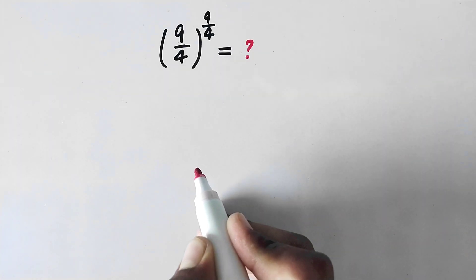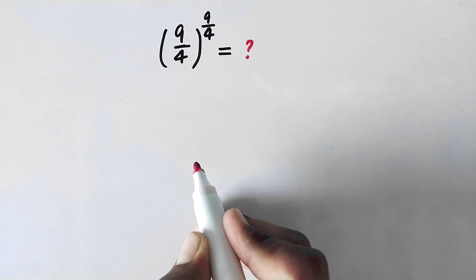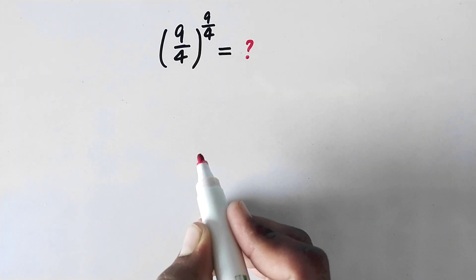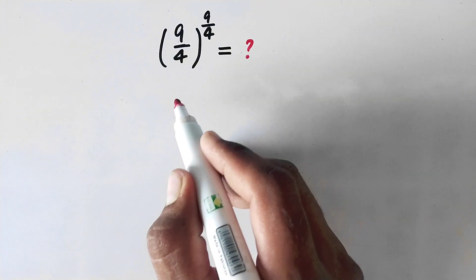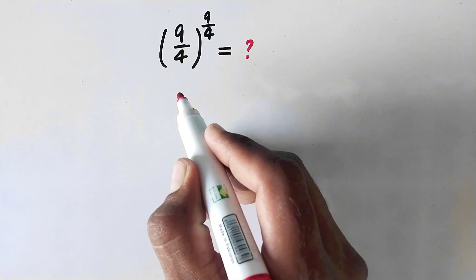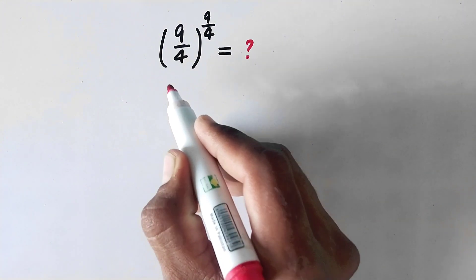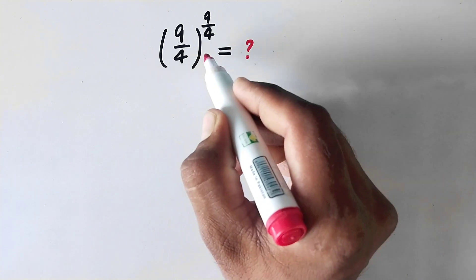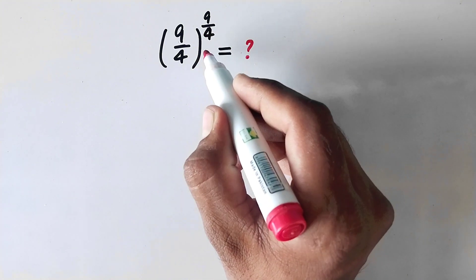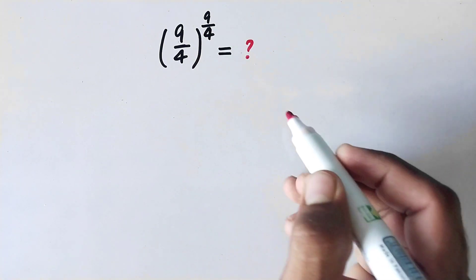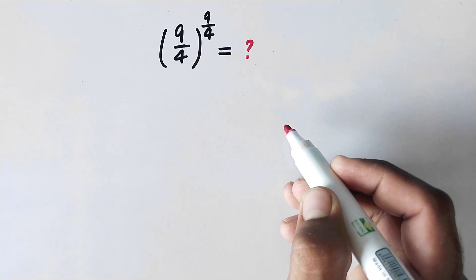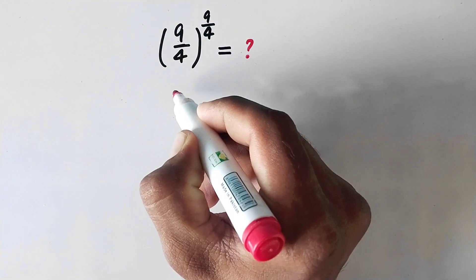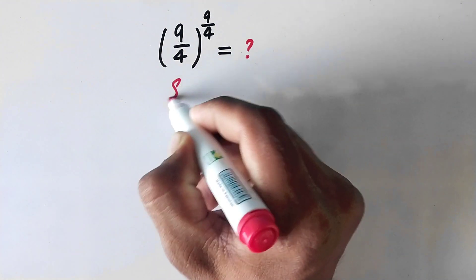Hello everyone and welcome to Explode Maths. In this video, we are going to solve a very nice olympiad math problem: 9 divided by 4, whole raised to power 9 divided by 4, is equal to what? So let us see its solution.